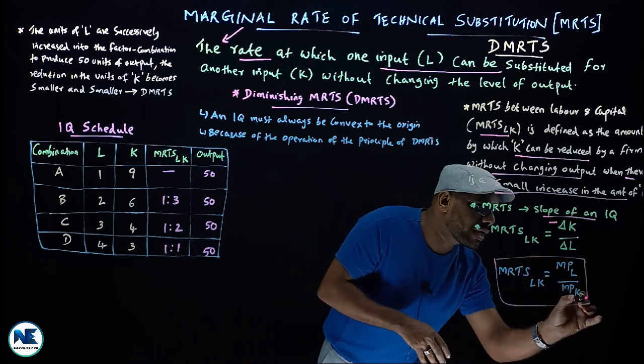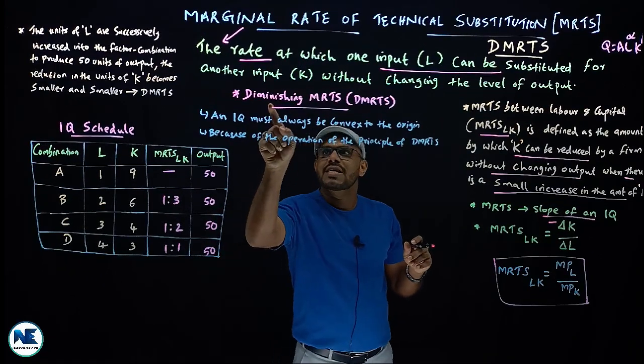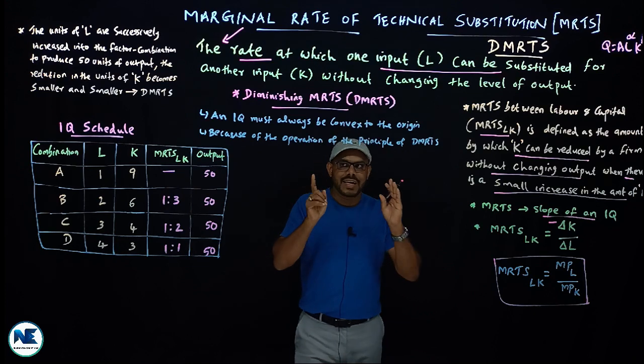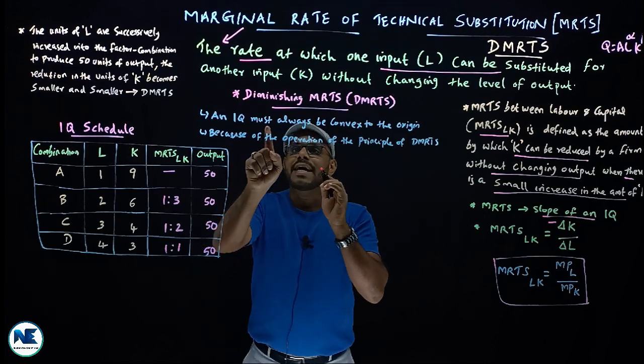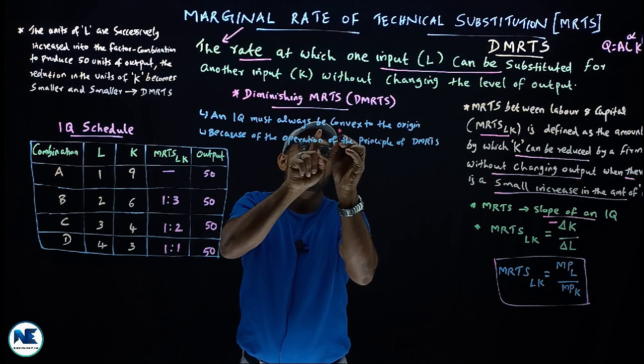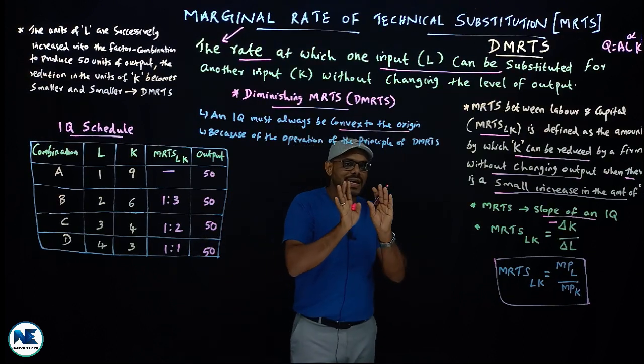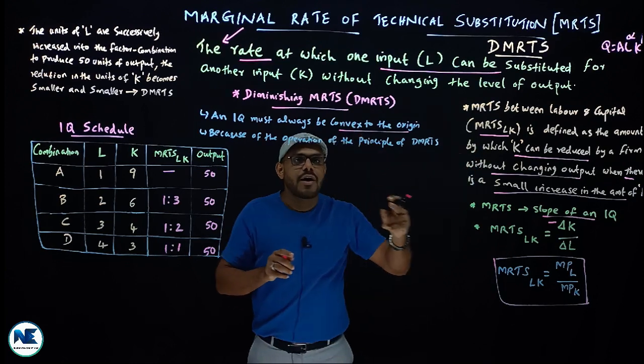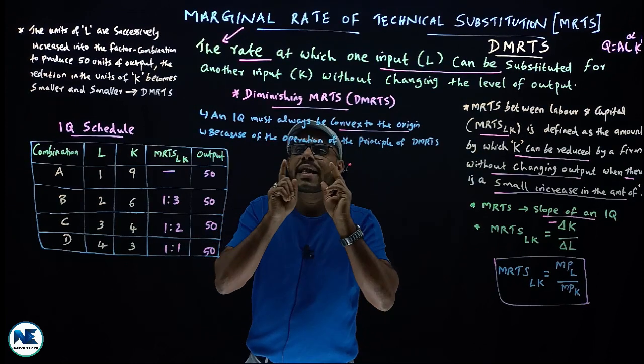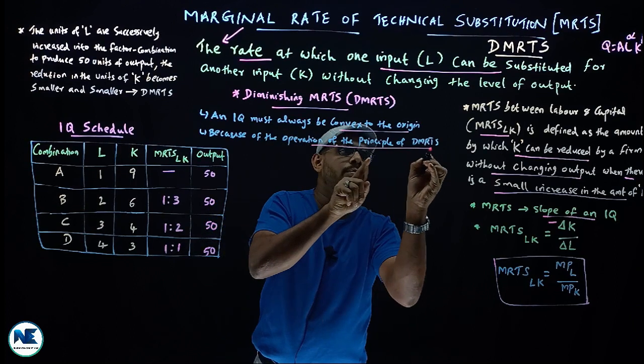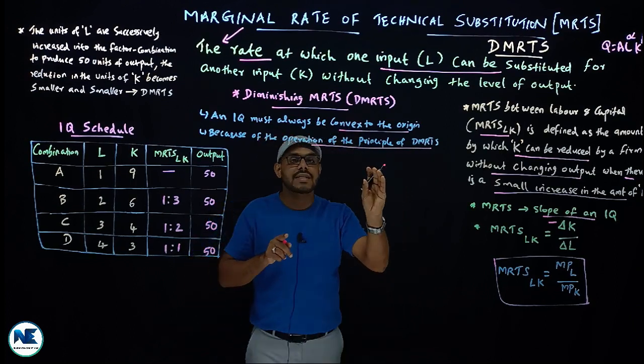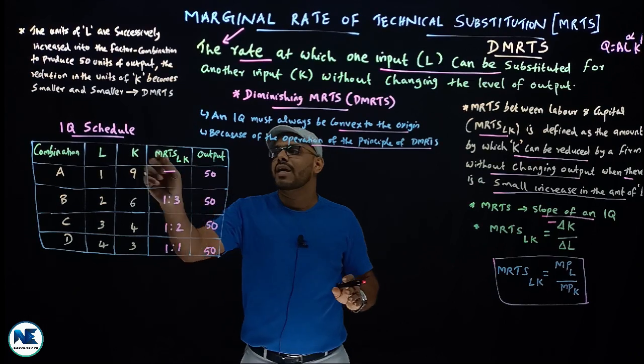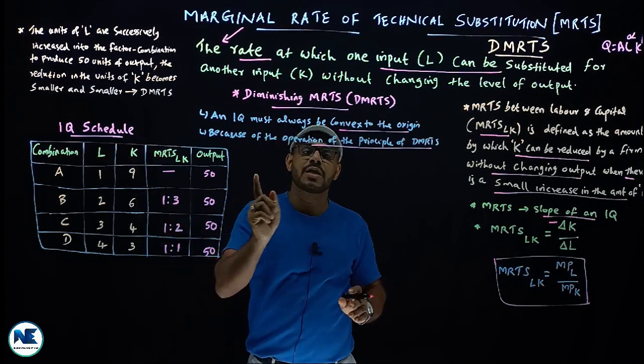An isoquant must always be convex to the origin. This convexity occurs because of the operation of the principle of diminishing marginal rate of technical substitution. We can prove this using the isoquant schedule.